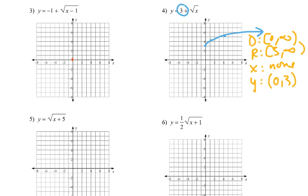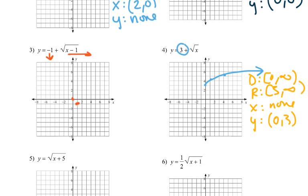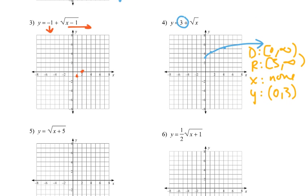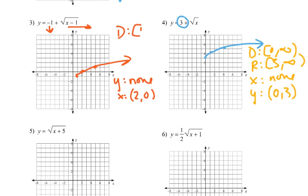Now number 3: we're going to shift to the right 1 and down 1 for our starting point. From that starting point, just like on the parent function we go right 1 and up 1, here we go right 1 and up 1 from down here. Then over 4 and up 2 from the starting point. There's no y-intercept. X-intercept is (2,0). The domain shifted to 1 to positive infinity, and the range moved down to negative 1 to positive infinity.